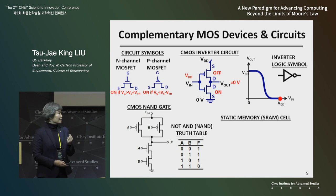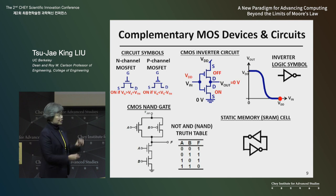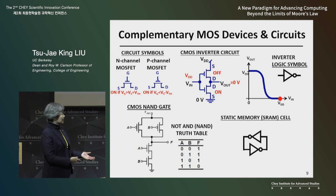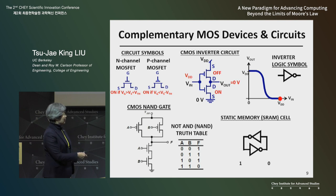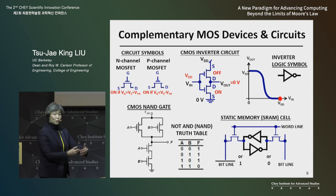Most of the transistors on a computing chip have memory. This is a static memory cell comprising two inverters cross-coupled together, so you can have two stable states: one side low and the other side high, or the left side high and the other side low. You can connect some transistors to access these memory storage nodes in an array — rows and columns of memory cells. A static memory cell comprises six transistors.